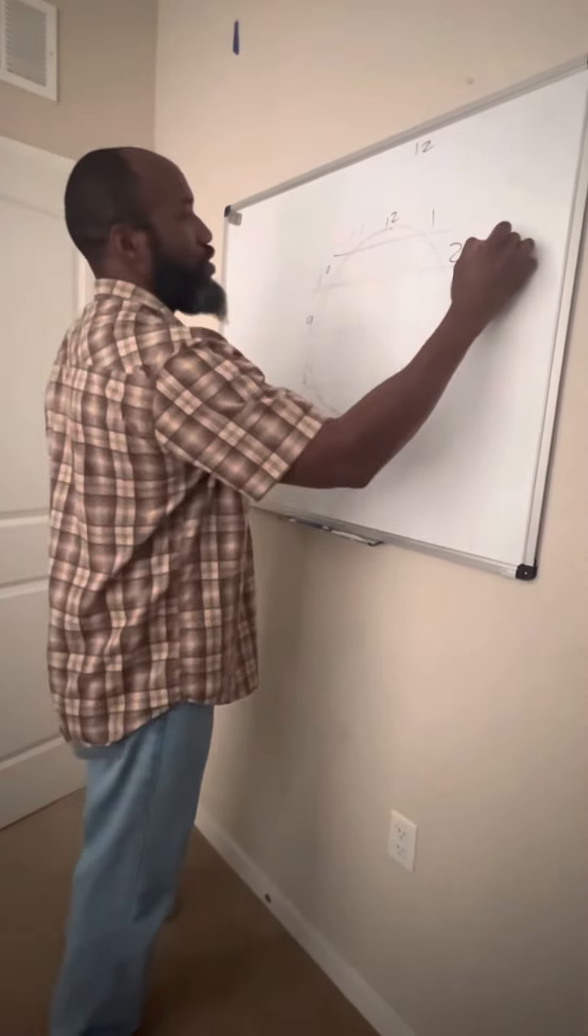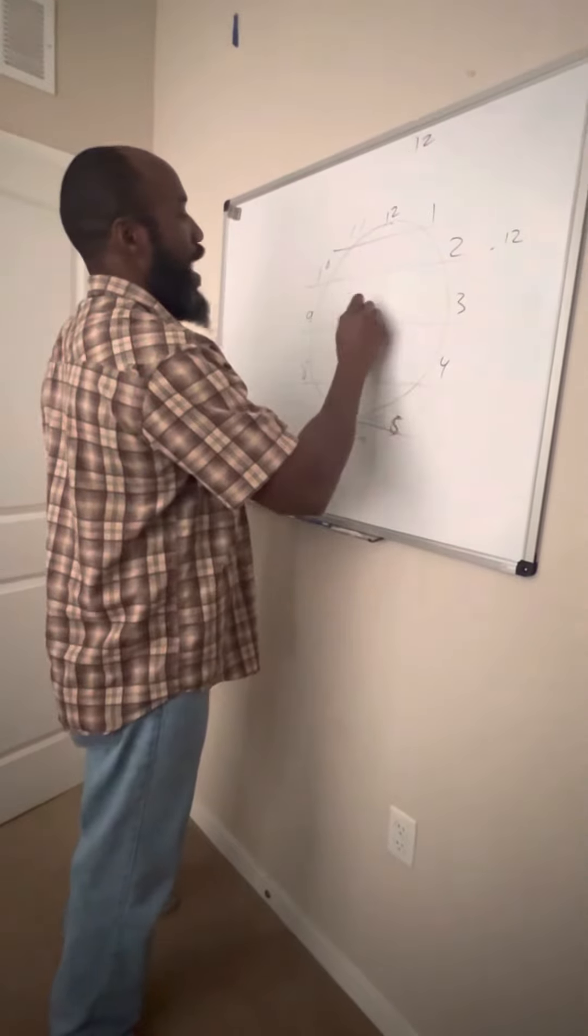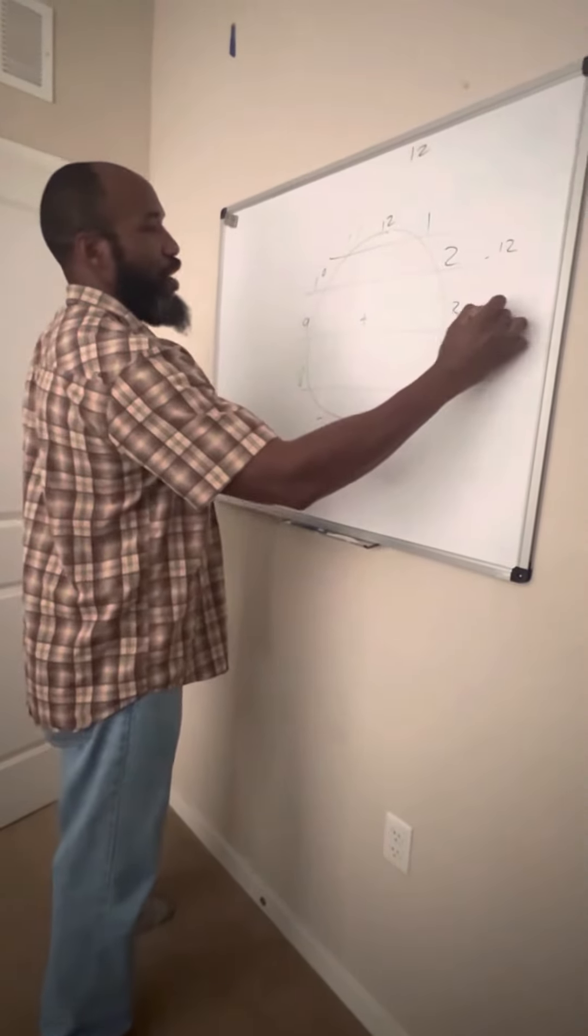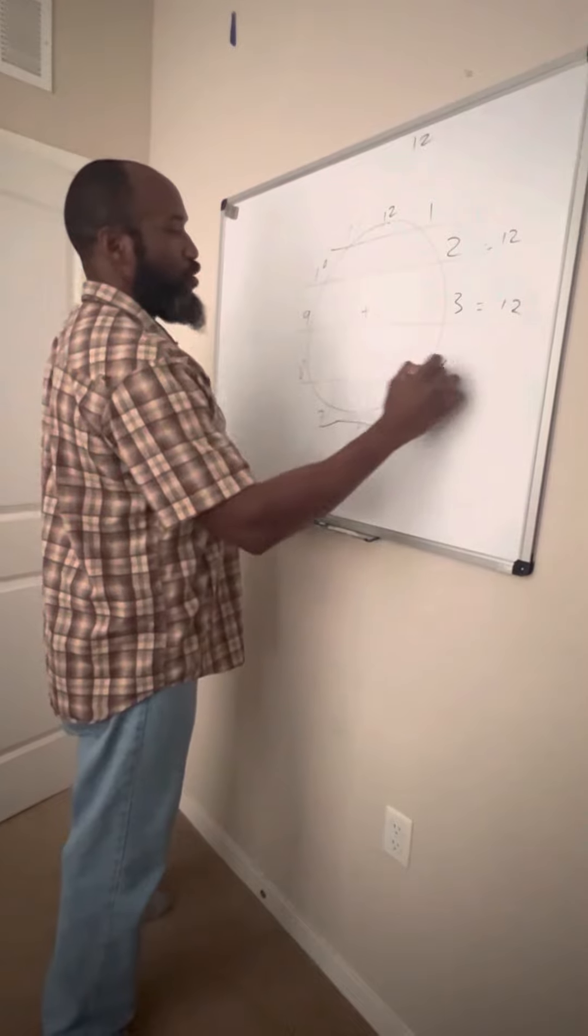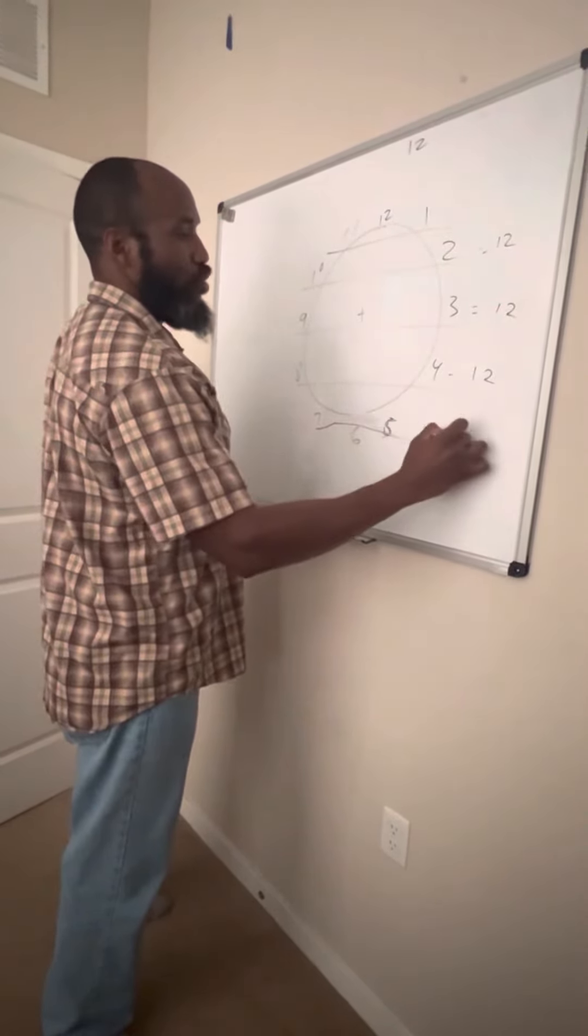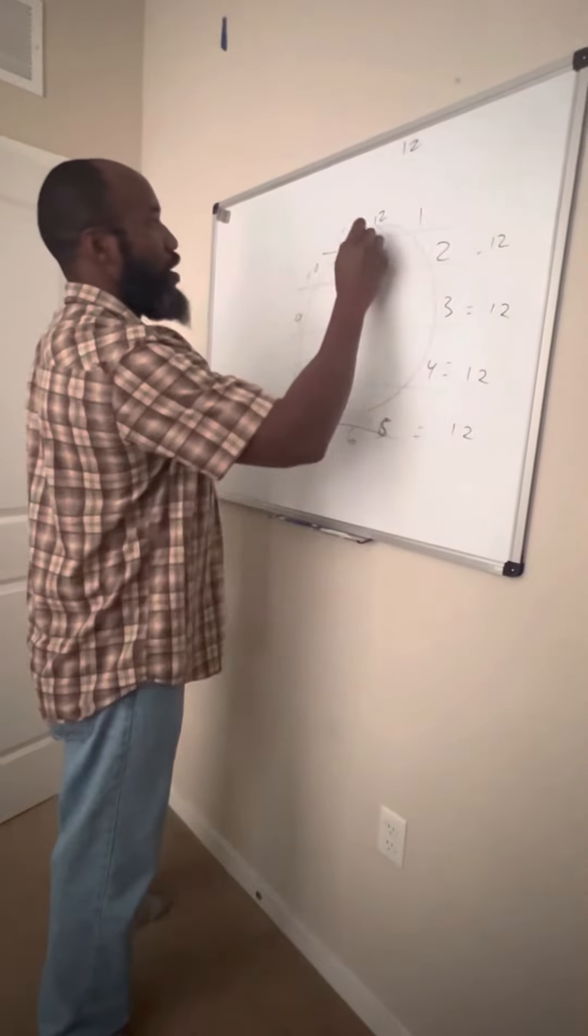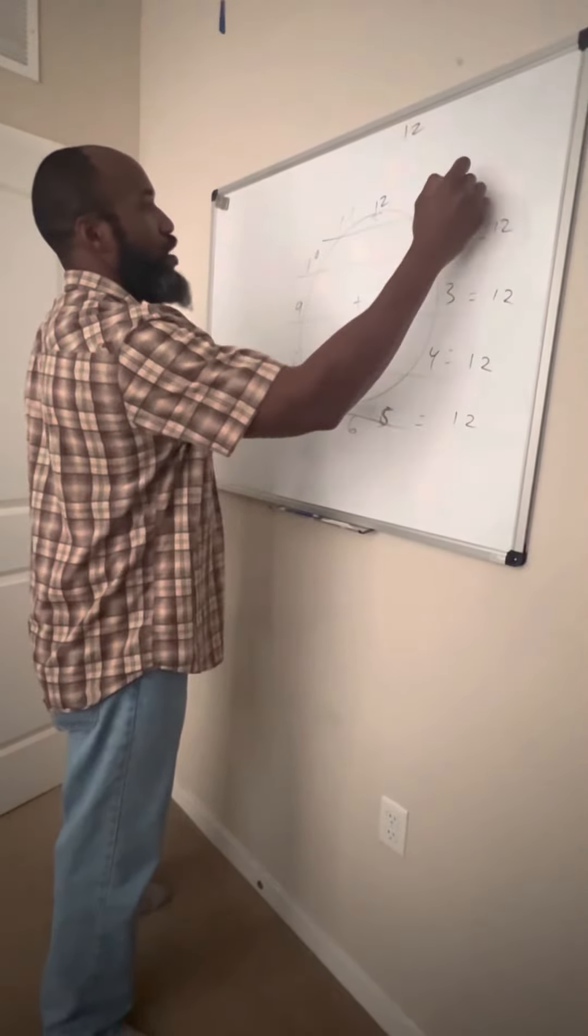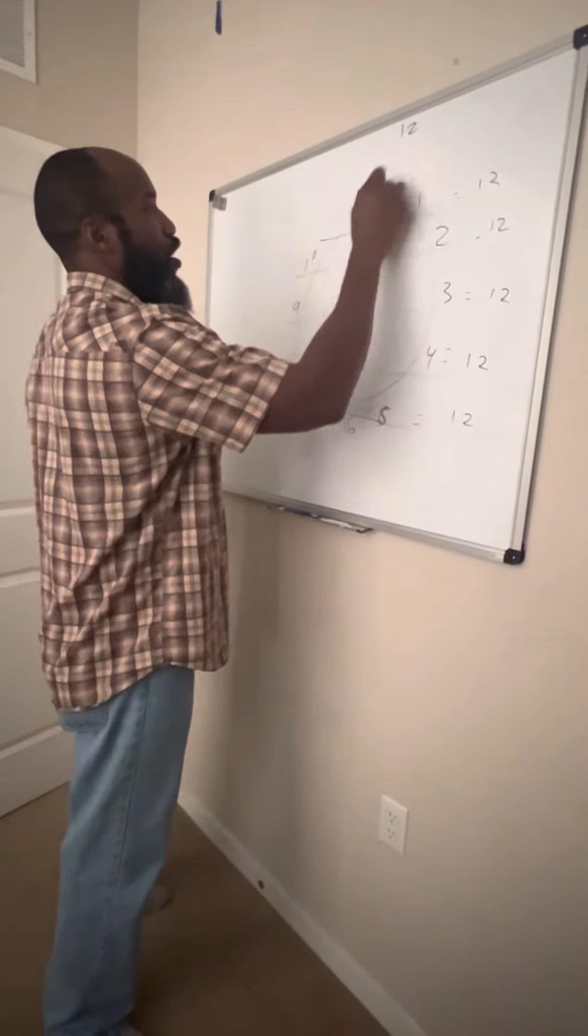10 and two is what? 12. Correct. Now we're adding nine and three is what? 12. Eight and four is what? 12. Seven and five is what? 12. And guess what? 11 and one is what? 12. You already know that is 12.